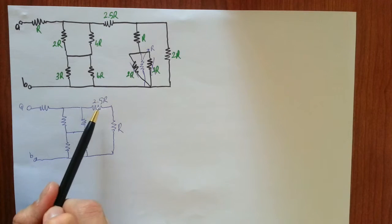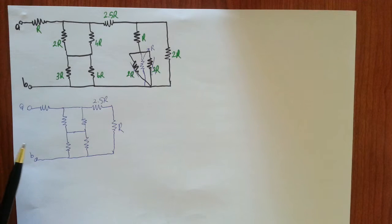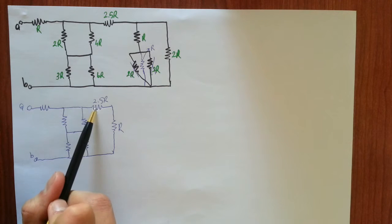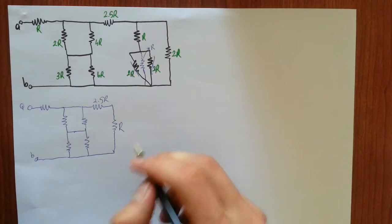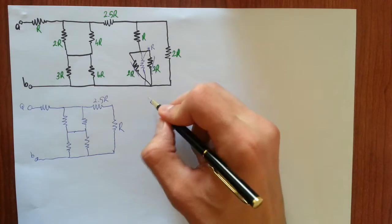And we have here two series resistors, so they make 3.5R equivalent resistor. Let's draw.